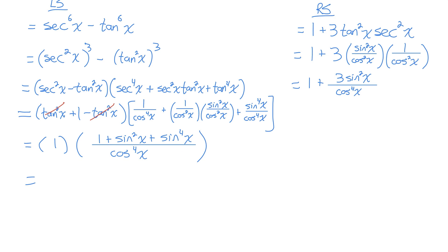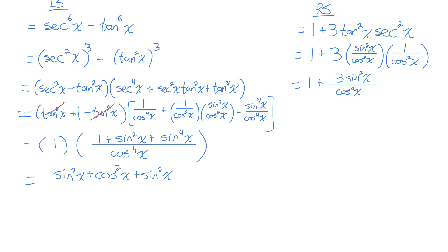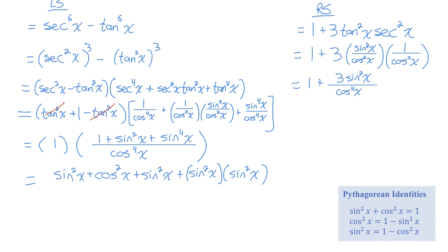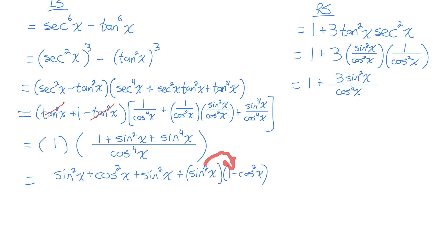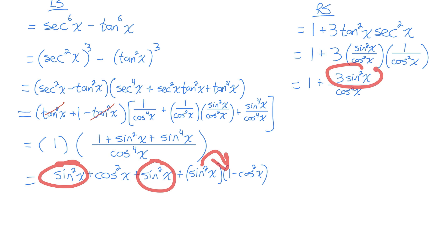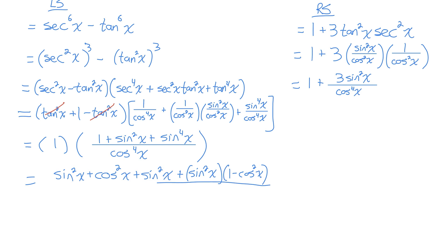Because I'm interested in generating more sine squareds, I'll start by changing the 1 using the Pythagorean identity to sine squared plus cos squared. And this sine to the power of 4x I can think of as sine squared x times sine squared x. Based on the Pythagorean identity, I'll change one of them to 1 minus cos squared x. When I distribute sine squared x into that (1 minus cos squared x), I get another sine squared x term. So there will be 1, 2, 3 sine squared x's — exactly what I need — and this is all over cosine to the power of 4 of x.